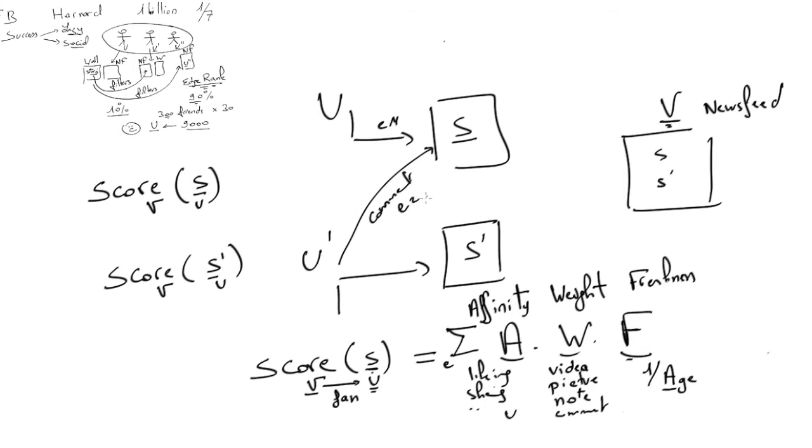Now, if somebody here, U', comments on S and creates another edge E2, then we will add to the original score a new score, which will now be the affinity to V towards U', because the new edge we are considering is from U'. How much V is a fan of U'. So if U' comments on something that U has posted and V is a fan of U', the affinity of this new edge will be bigger.